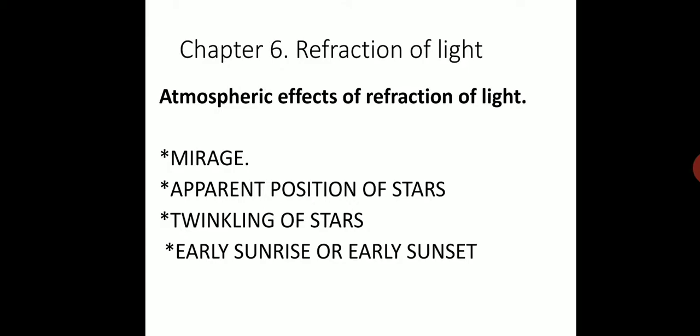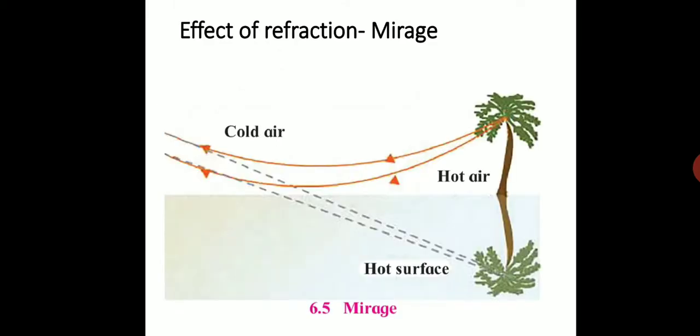The refractive index of that air keeps increasing as we go to increasing height. Now see, suppose this is our road. Because of heat, the air above the road becomes very hot. As we go in the upward direction, refractive index increases. Because of this, the light rays coming from the distant object are bent toward the normal.